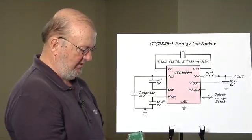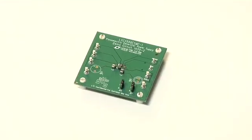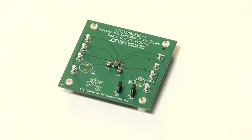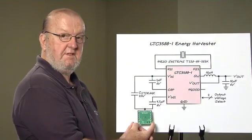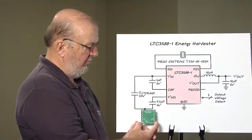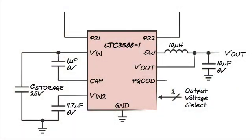This is an example of the demo board that's available at your Linear Technology local sales office or you can go to www.linear.com and request a demo board for the 3588. It consists of the 3588, an input storage element, an output storage element, and three other components to complete your energy harvesting system.